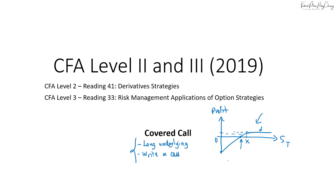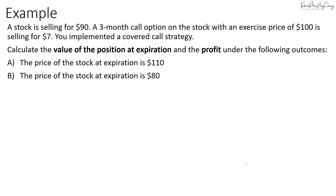When the share price drops all the way to zero, this is your maximum loss. Now let's see how we compute all this. Let's say we have a stock selling for $90 and there's a three-month call option on the stock with an exercise price of $100, selling for $7. We implement a covered call strategy to calculate the value of the position at expiration and the profit under outcomes where the stock price is $110 and $80.